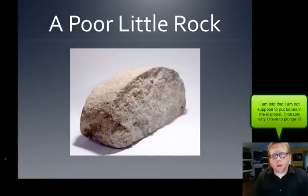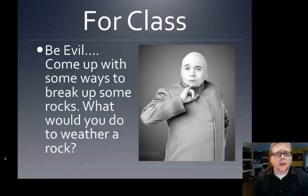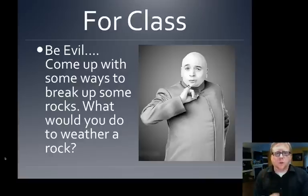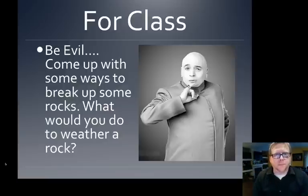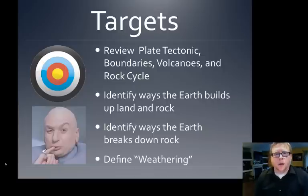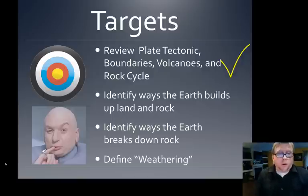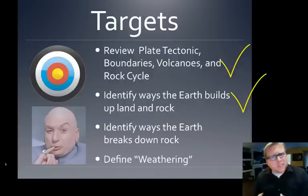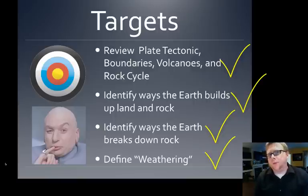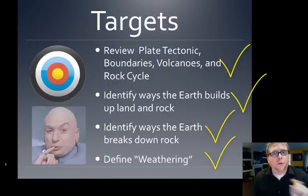So here's your task for tomorrow: I want you to be evil. Come up with as many ways as you can to break up rocks and weather them — dipping them in acid, blowing them up, crushing them, using ice. Let's quickly review what we did: we reviewed plate tectonics, boundaries, volcanoes, and the rock cycle and saw how they all act to build up the earth. We also saw that the earth breaks down rock through subduction and convergent boundaries, but mostly through weathering — the process of breaking rocks from big rocks to little rocks. We still haven't figured out what's doing it, but we'll do that next. Have a good day — see you tomorrow.